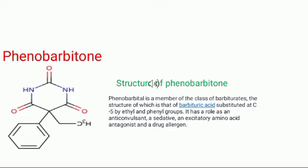Structure of Phenobarbitone: Phenobarbitone is a member of the class of barbiturates, the structure of which is that of barbituric acid substituted at C5 by ethyl and phenyl groups. It has a role as an anticonvulsant, a sedative, an excitatory amino acid antagonist, and a drug allergen.